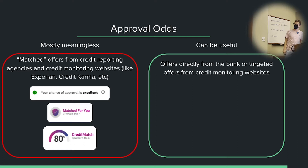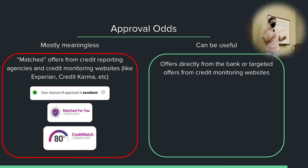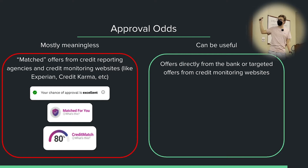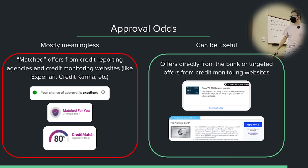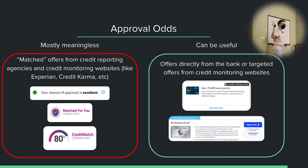What can be useful, however, are offers directly from the bank or targeted offers from credit monitoring websites — not agencies like Experian, but websites. Credit Karma does have some targeted offers. Creditcards.com has some targeted offers. These are the famous Chase Blackstar offers, which can actually mean something — they'll appear directly on your Chase account. There's also the pre-qualified offer for the Platinum card from creditcards.com, which can unlock a special elevated signup bonus on the American Express Platinum card. So these actually can mean something.